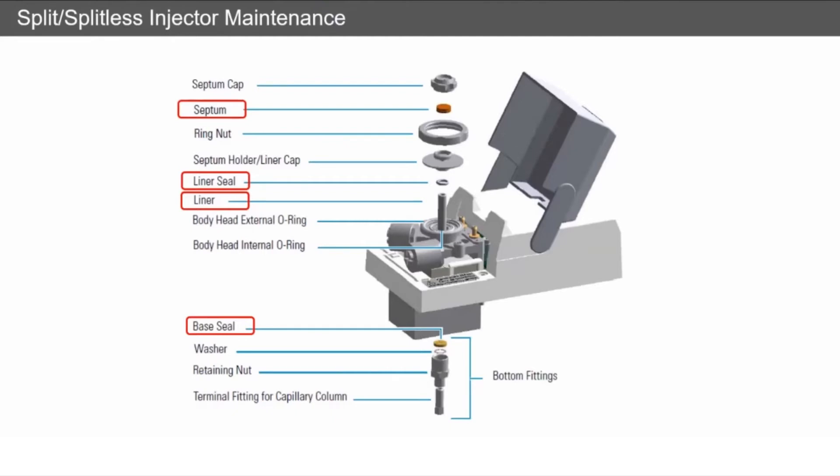Something that's regularly overlooked changing is the liner seal, which is a little o-ring. So replace this whenever you change the liner. They become compressed, they become brittle, and you start getting leaks and irreproducible split flows.